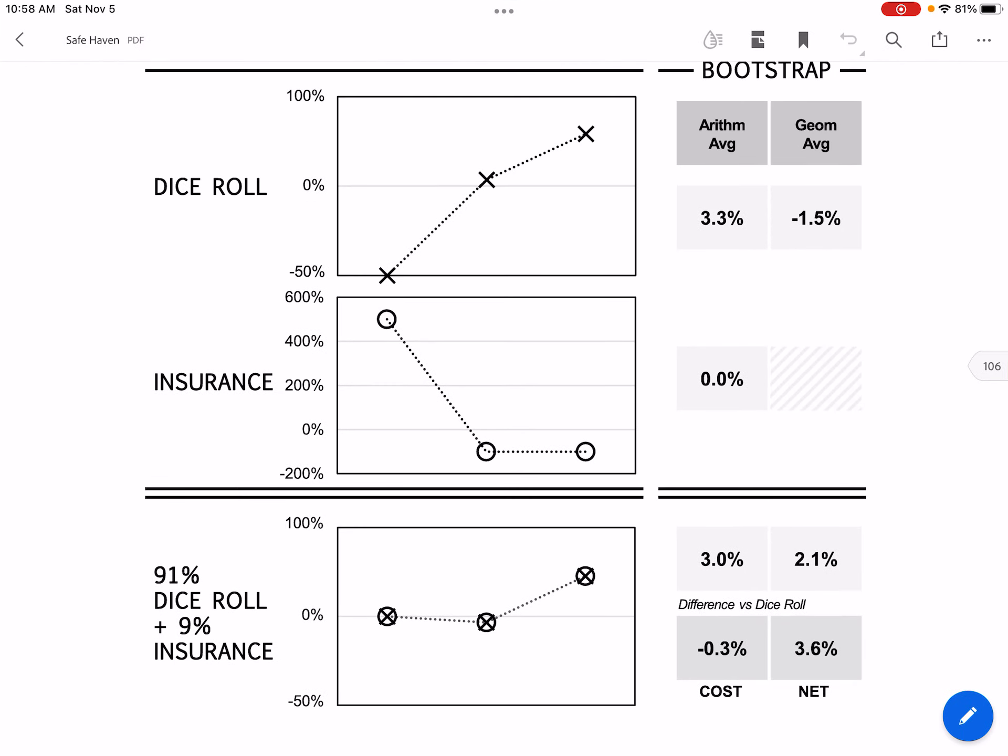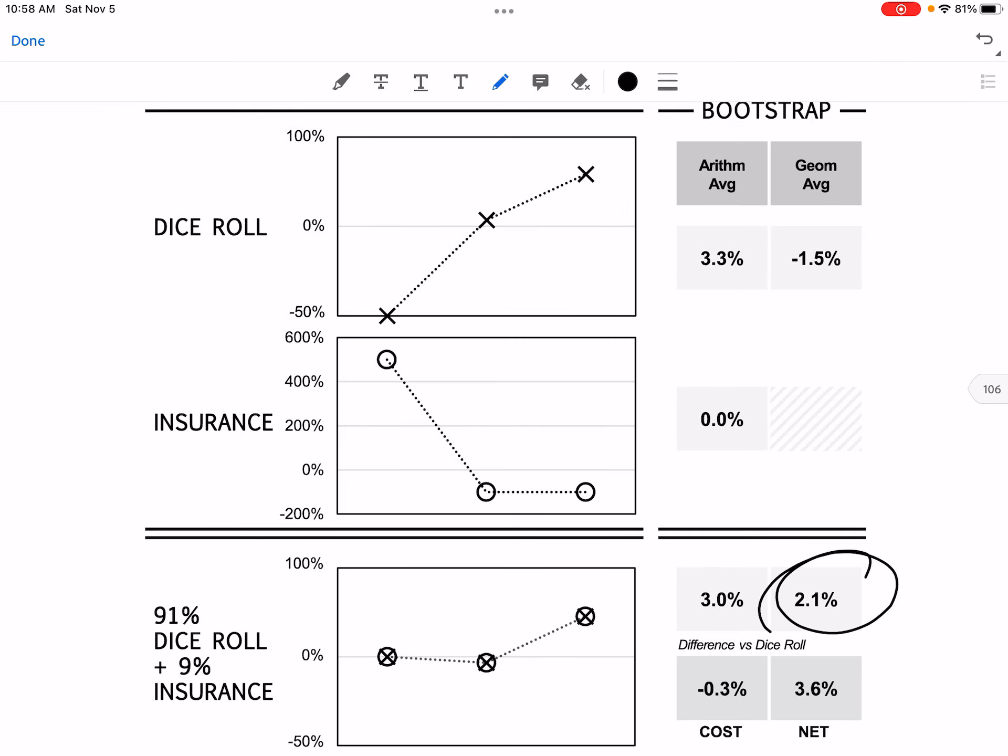If you go to the book and you look at the geometric average of the rolls, you get 2.1%, which is exactly what we found.